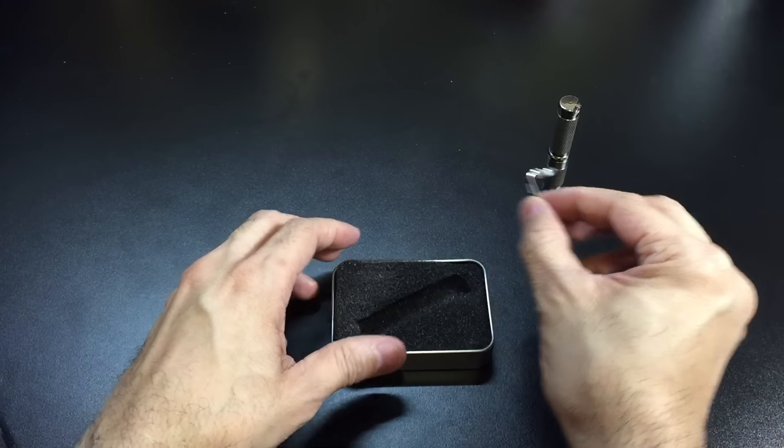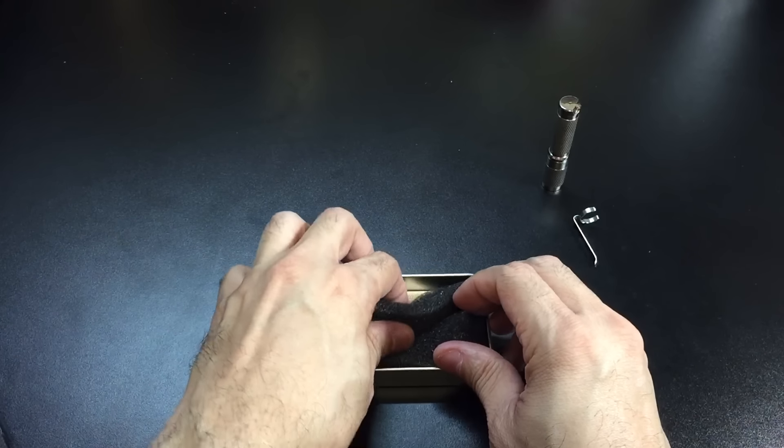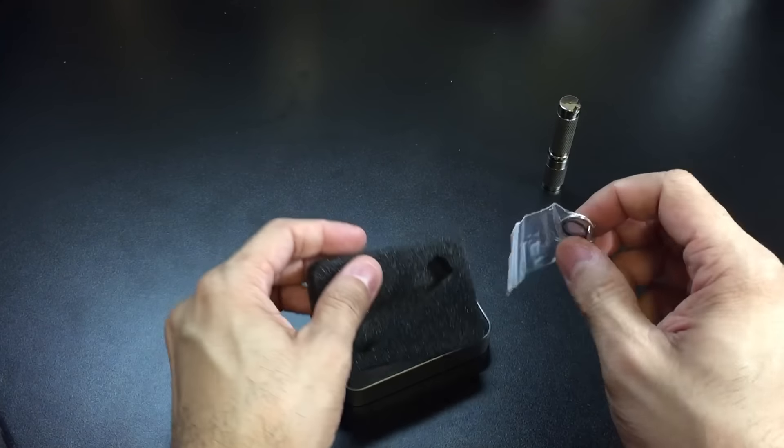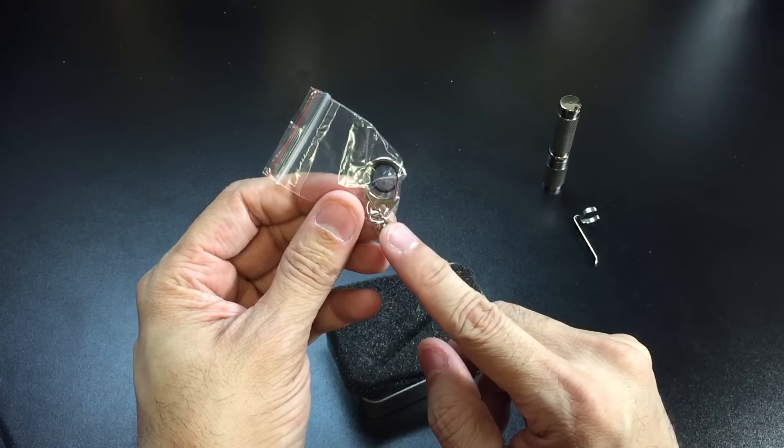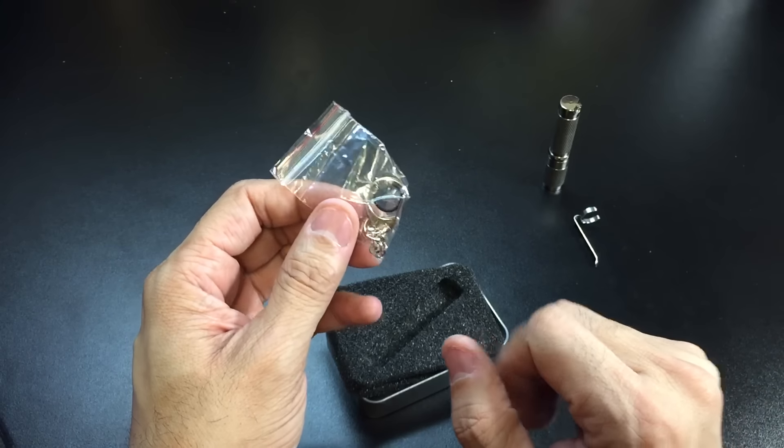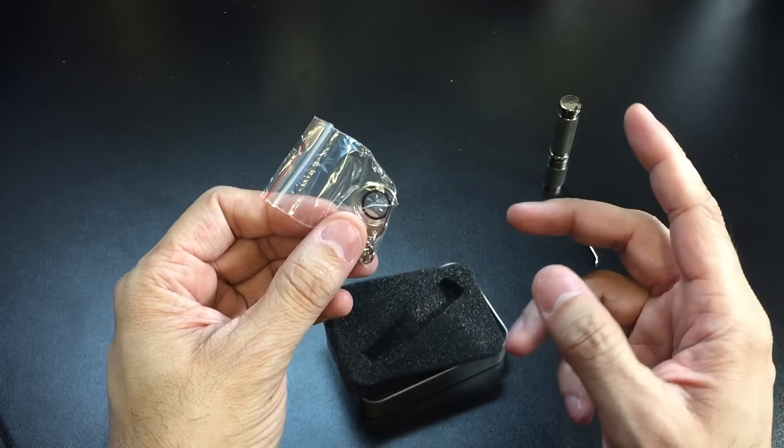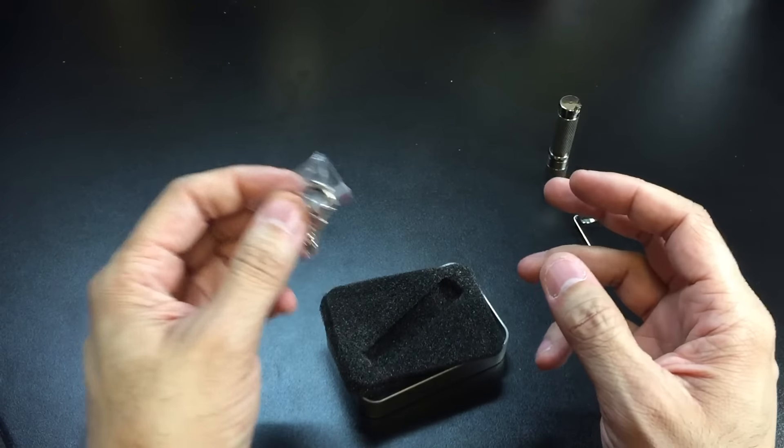You do have an included pocket clip. And then in the bottom here, you have this little bag which has a couple of things. You have a spare O-ring, and then you have a split ring with a little chain and a crab claw on there. This will actually help you to attach the flashlight onto a keychain if you wanted to do that. So it's really cool that they include that as well.